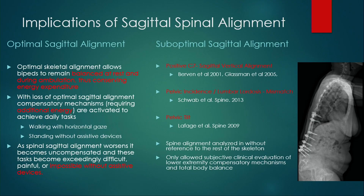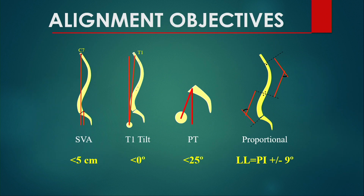In terms of sagittal alignment, optimal sagittal alignment allows the head to fall over the feet. With suboptimal sagittal alignment, we find patients recruit compensatory mechanisms to maintain the cone of economy, and with severe deformities they fall out of that cone into decompensated malalignment. Our alignment objectives include SVA — probably the most tried and true but a flawed metric for determining correction — as well as pelvic tilt, which correlates well to quality of life measures postoperatively, and PI-LL mismatch.